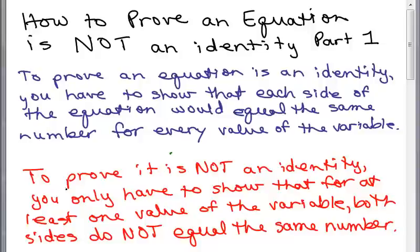To prove that an equation is not an identity, all you need to do is show that for at least one value you plug in for the variable, the two sides do not equal the same number. So that's usually easier — if you're sure something's not an identity, just try one number and prove it can't be an identity because you get a different thing on each side.